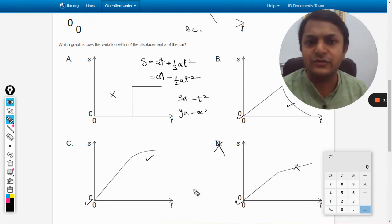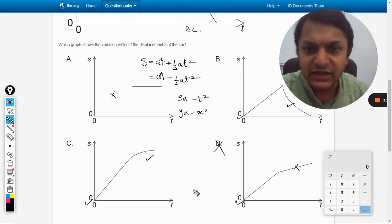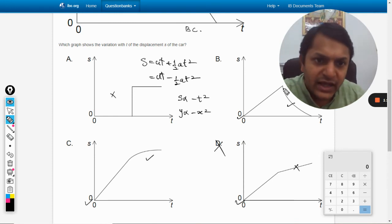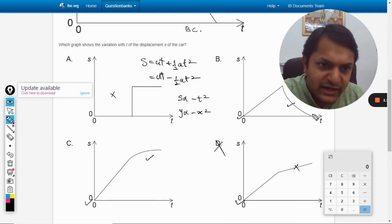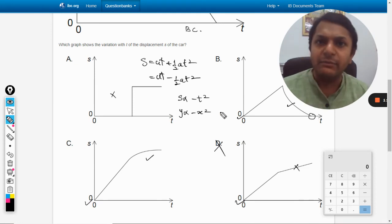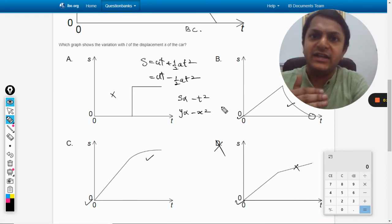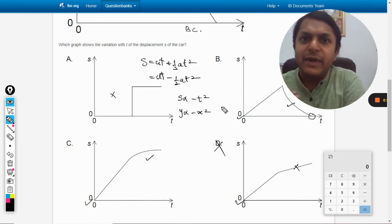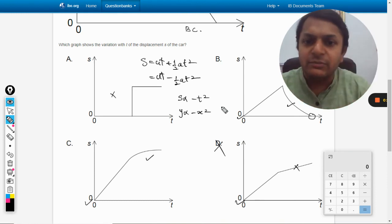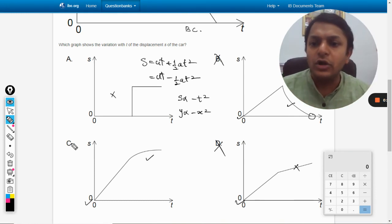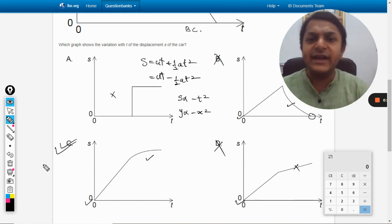So D is not the right answer. The answer will be from B and C. Now furthermore in B, the displacement is becoming zero after some time. But because the velocity is never becoming negative, the body is not returning back. The displacement can never become zero, so B is also wrong. C will be the correct option.